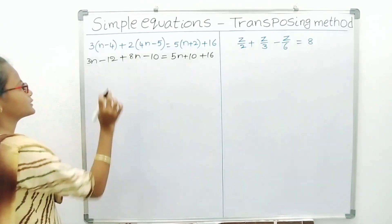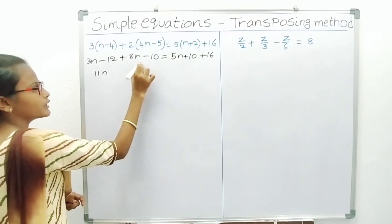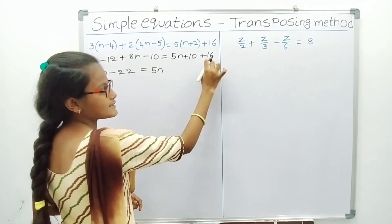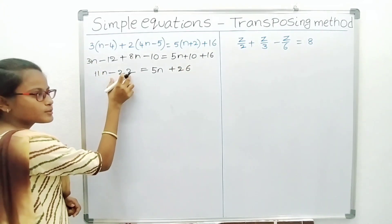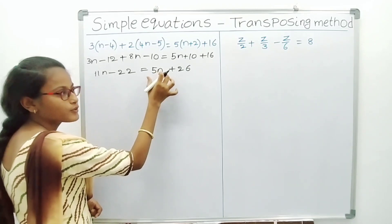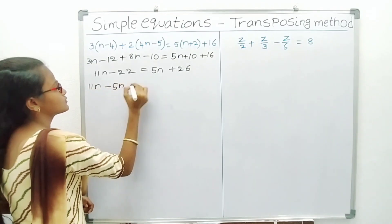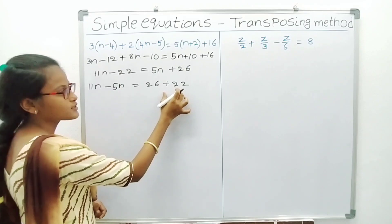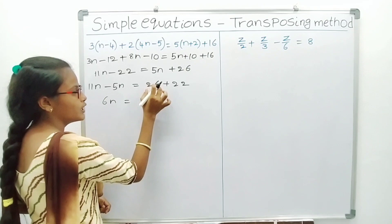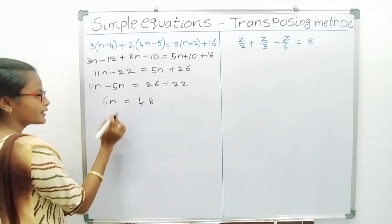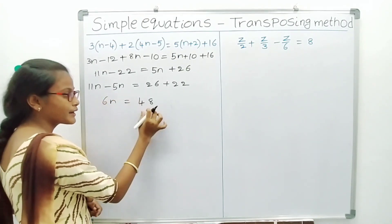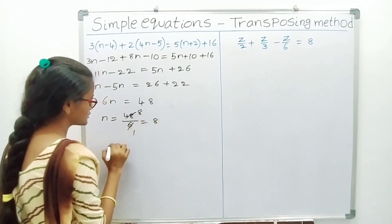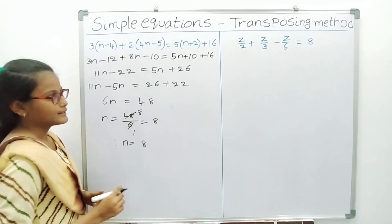3n plus 8n are like terms; 3n plus 8n is 11n, minus 12 minus 10 is minus 22. Is equal to 5n plus 10 plus 16, which is 5n plus 26. Transpose minus 22 from LHS to RHS and plus 5n from RHS to LHS. 11n minus 5n equals 26 plus 22, which is 48. So 6n equals 48, and n is equal to 48 by 6, therefore n is equal to 8.